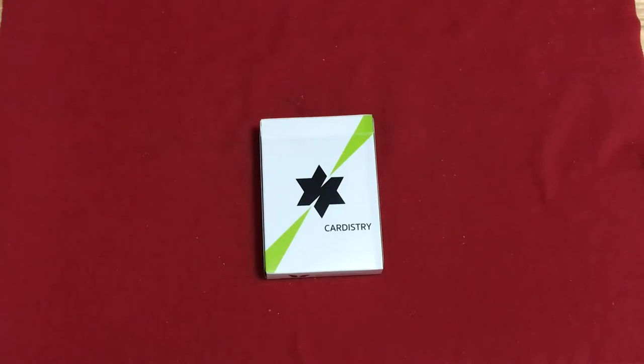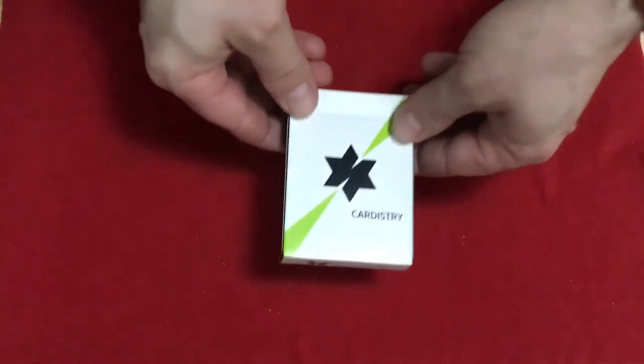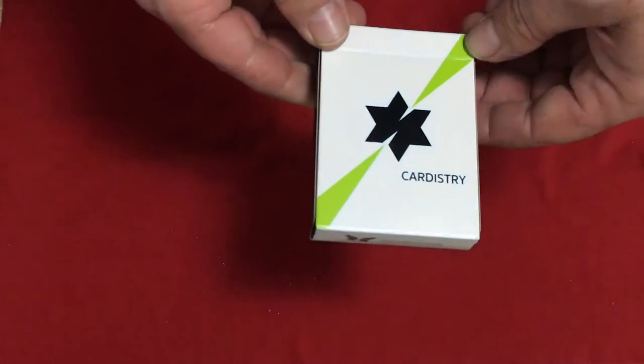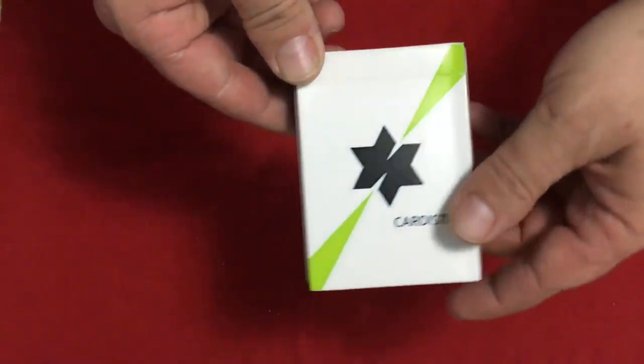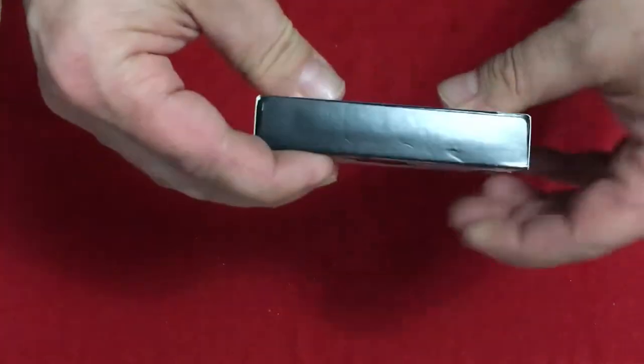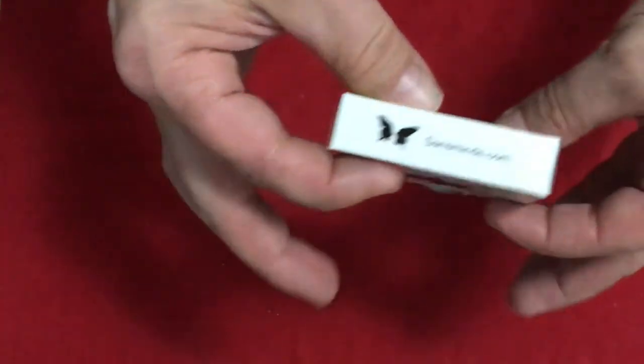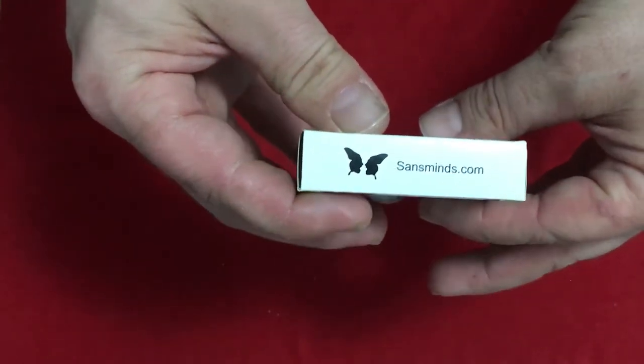Or maybe it was elsewhere. But Murphy's Magic, they didn't have any information on the printer. So the front simply says Cardistry. You see the Surrican, a little green color for it. Nothing on the one side or the other or the top. The bottom says Sandsminds.com with the logo.